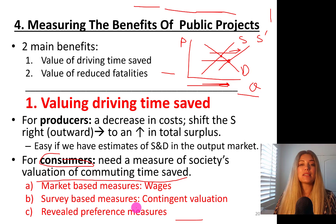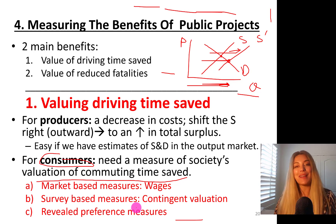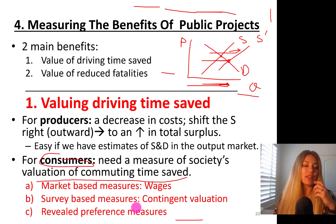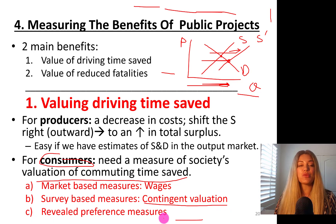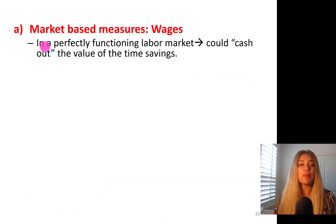We also have survey-based measures — this is called contingent valuation — and also revealed preference measures. We are going to talk about all of them one by one. The first one is the market-based measure to value time saved driving.